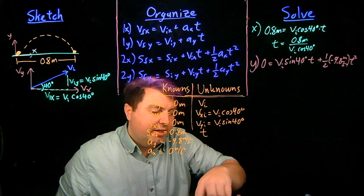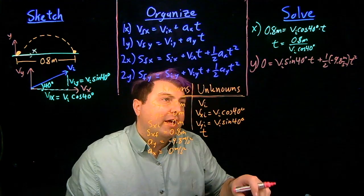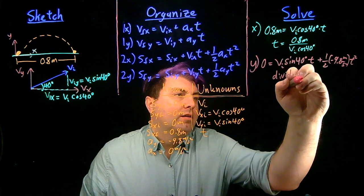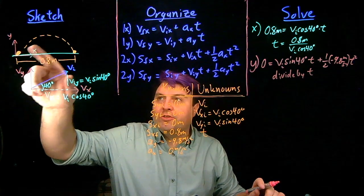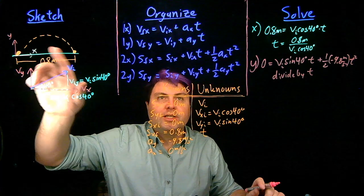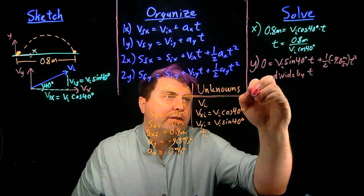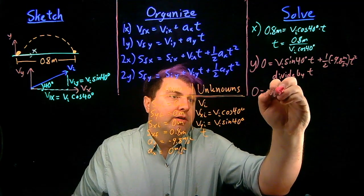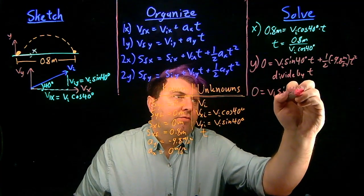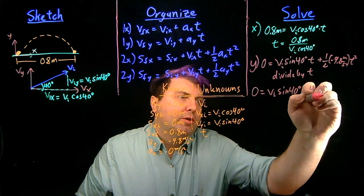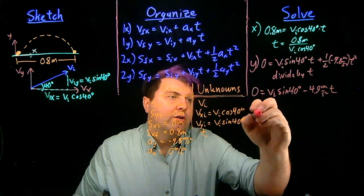Over on this side, we can divide by t, because t equals 0 is a valid solution in the y direction, but it's not a valid solution in the x direction. So if we do that, we get 0 equals vi sine of 40 degrees minus 4.9 meters per second squared t.